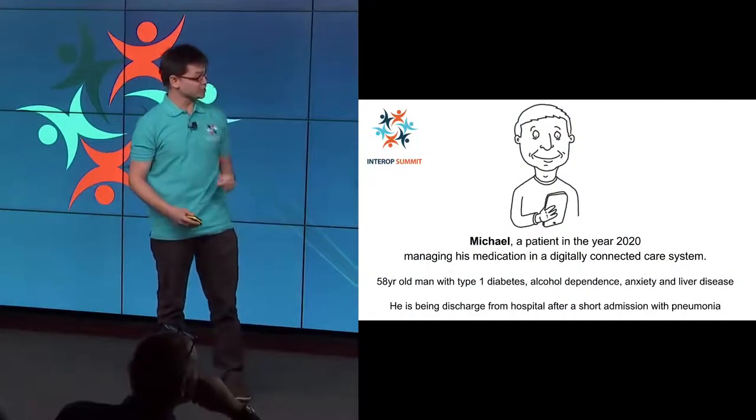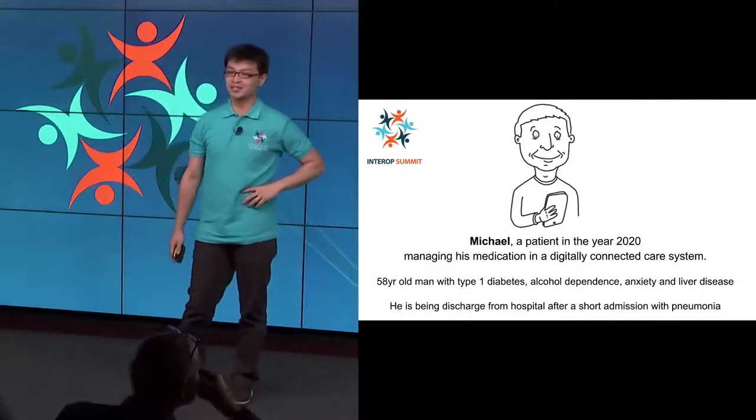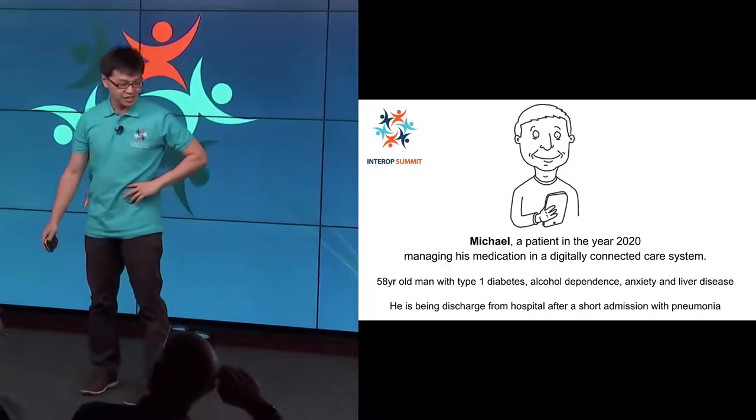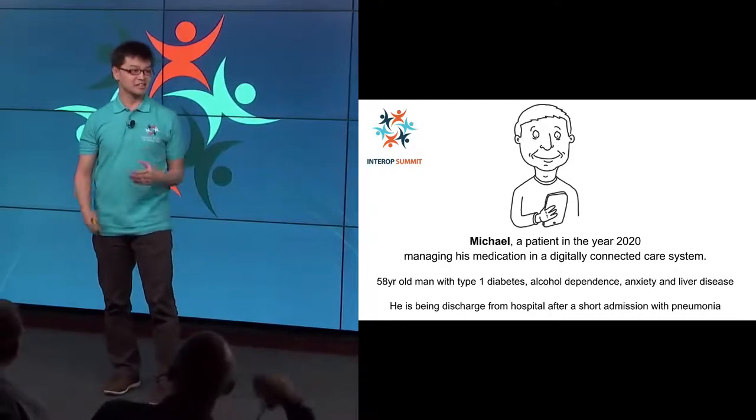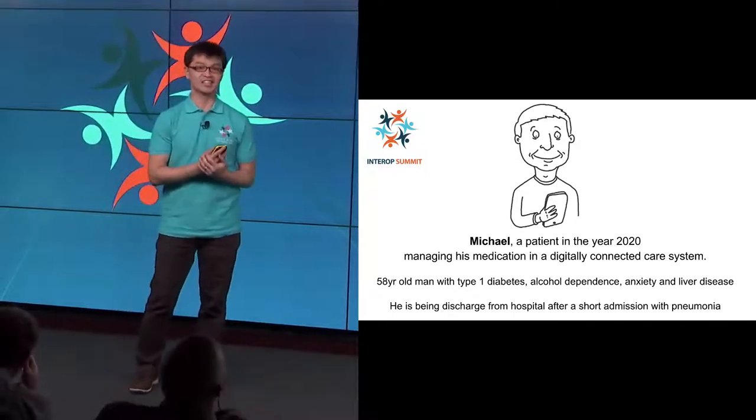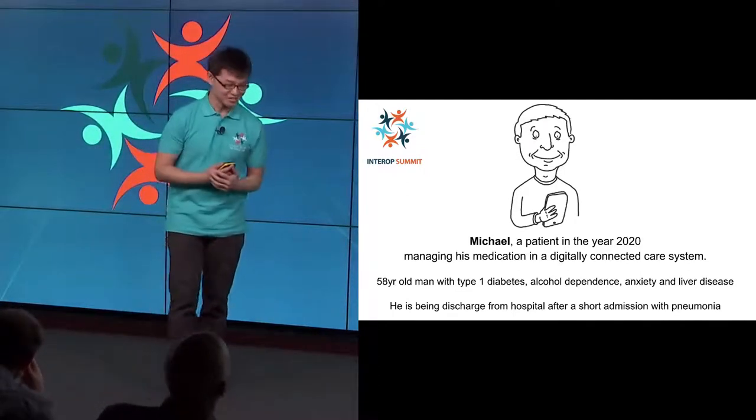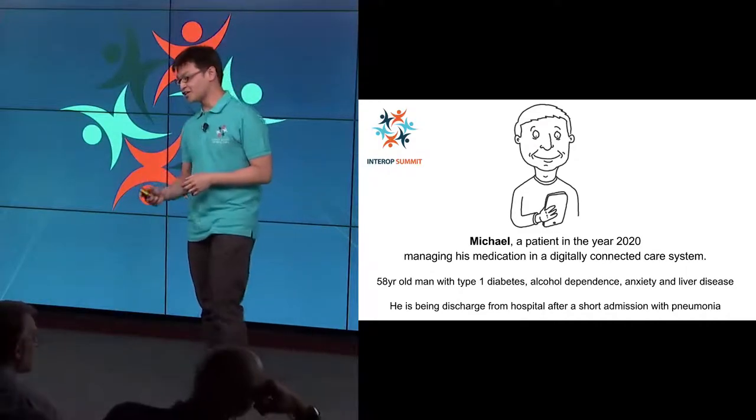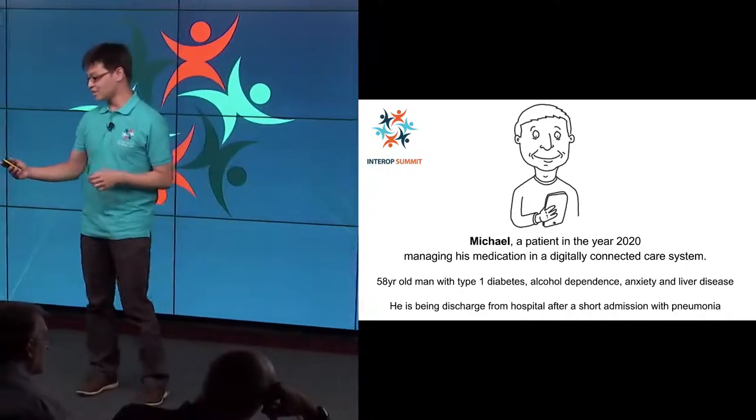Please meet Michael. He's a patient in the year 2020, and he'll be managing his medications in a digital ecosystem. He's 58, has type 1 diabetes, alcohol dependence, anxiety, and liver disease - a typical patient. He's just about to be discharged from hospital following a short admission with pneumonia.